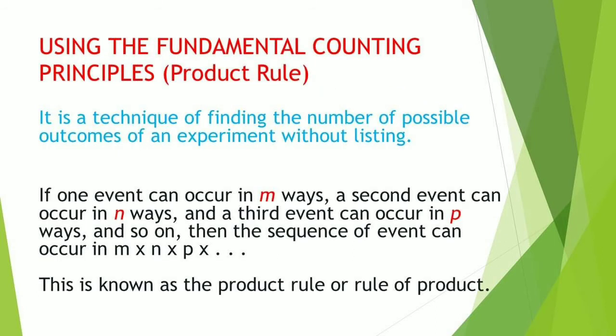Now, using the fundamental counting principle or the product rule, it is a technique of finding the number of possible outcomes of an experiment without listing. If one event can occur in m ways, a second event can occur in n ways, and a third event can occur in p ways, and so on, then the sequence of events can occur in m times n times p times dot dot dot. This is known as the product rule or rule of product.